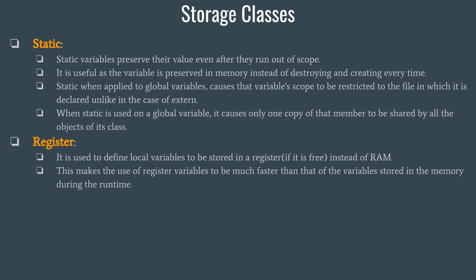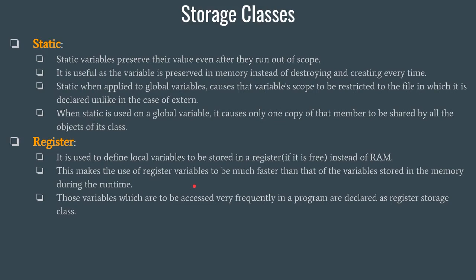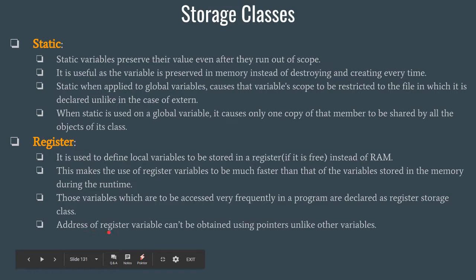It makes no sense to use up a register just to store a value which is accessed only three to five times in the entire program execution. Variables that need to be accessed frequently are declared as register storage class. Lastly, the address of a register variable cannot be obtained. When we have variables in RAM, we can obtain their address using pointers, but the address of register variables cannot be obtained using pointers.